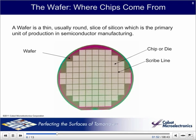Chips are square or rectangular devices, usually a centimeter or two in dimension, and are rather thin — 0.775 millimeters in the third dimension, similar to a coin. They are made by the dozens or hundreds, depending on their size, on the surface of a silicon wafer. Silicon wafers are most commonly 200 millimeters, or about 8 inches in diameter, and 300 millimeters, which is close to 12 inches in diameter.